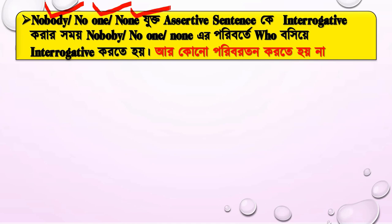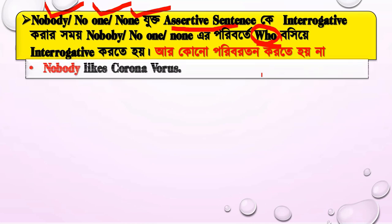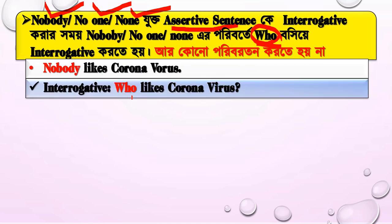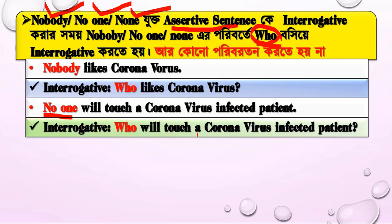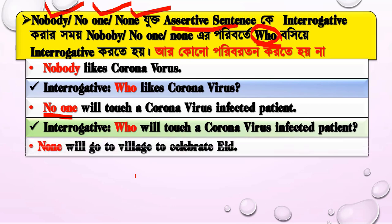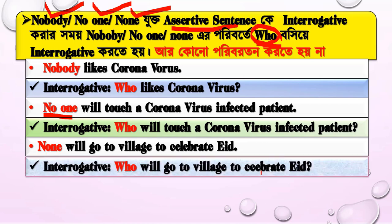Now: 'Nobody' and 'No one.' For example: 'No one likes coronavirus.' 'No one will touch a coronavirus infected patient' becomes 'Who will touch a coronavirus infected patient?' 'None will go to village to celebrate Eid' becomes 'Who will go to village to celebrate Eid?'